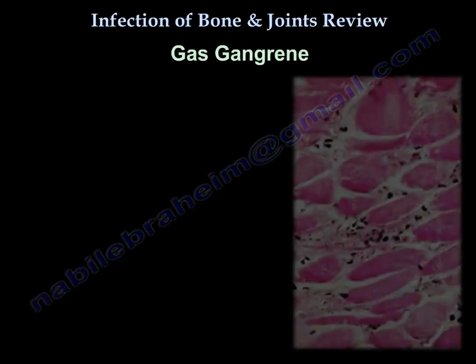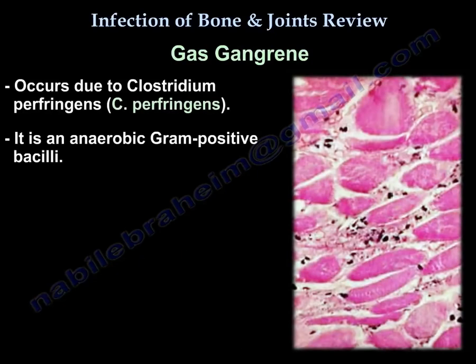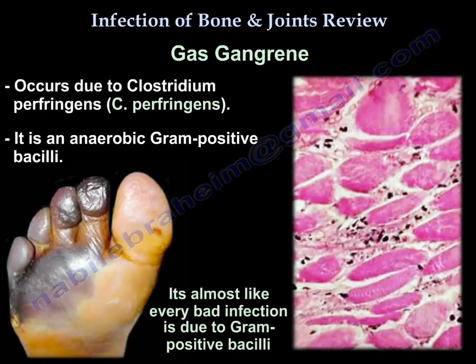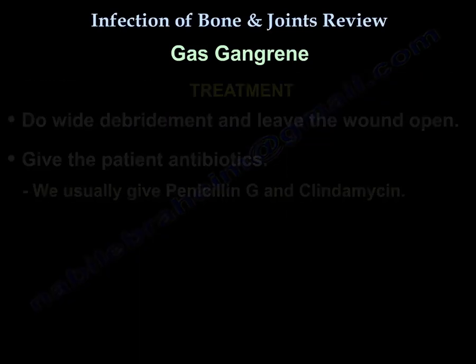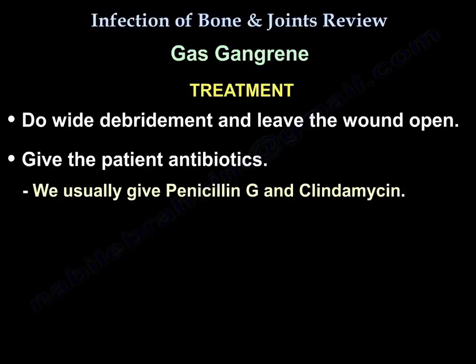Gas gangrene occurs from Clostridium perfringens, an anaerobic gram-positive bacillus. There will be linear streaks of gas in the tissues. Treatment is wide debridement, leaving the wound open, plus antibiotics. We usually give penicillin G and clindamycin.